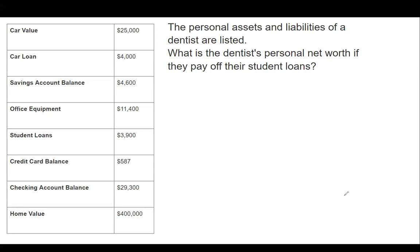We are going to cross off their student loans — we're saying they've paid that off. So now we're going to go through and figure out what's an asset and what's a liability.